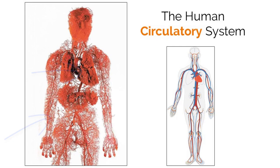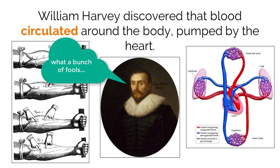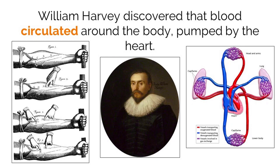Before we dive into the details, let's take a look back in time before we knew how the system worked. Before our modern understanding, people in the 17th century thought that blood was created in the liver and moved around the body through arteries, where it then disappeared once it was used. They thought new blood was being continuously created in the liver, and that veins were used to cool the body.